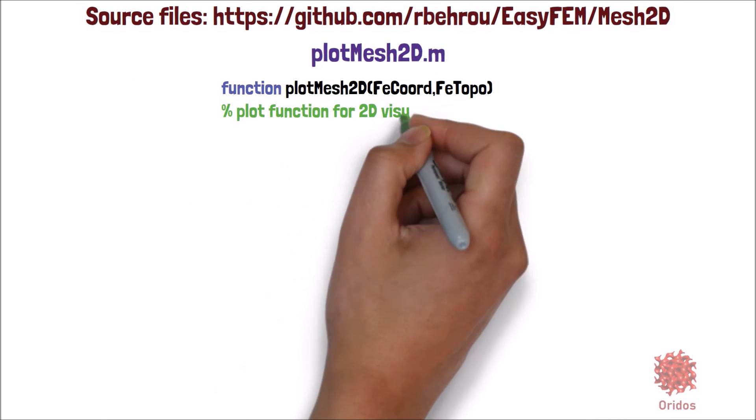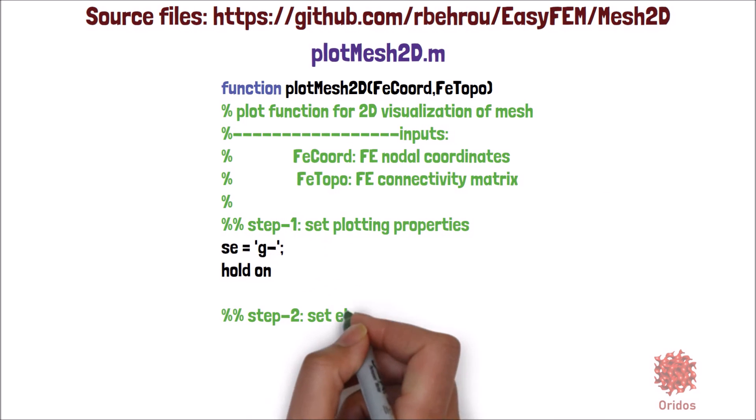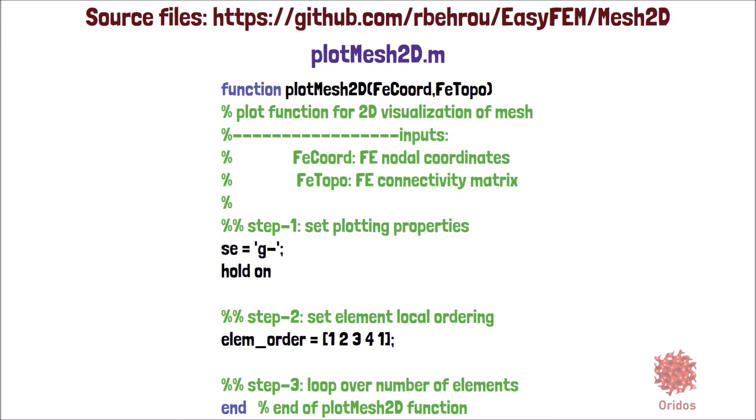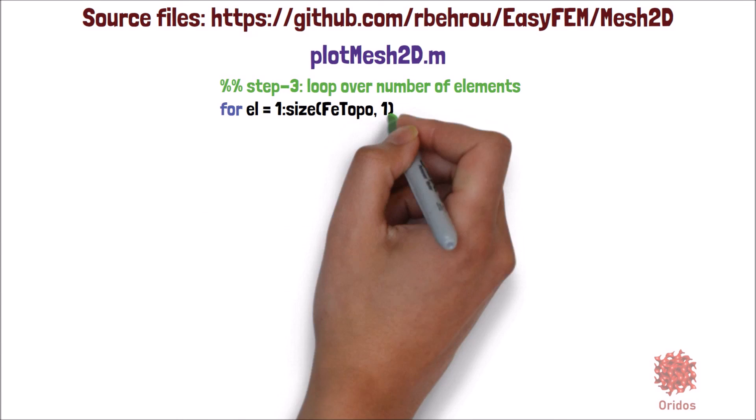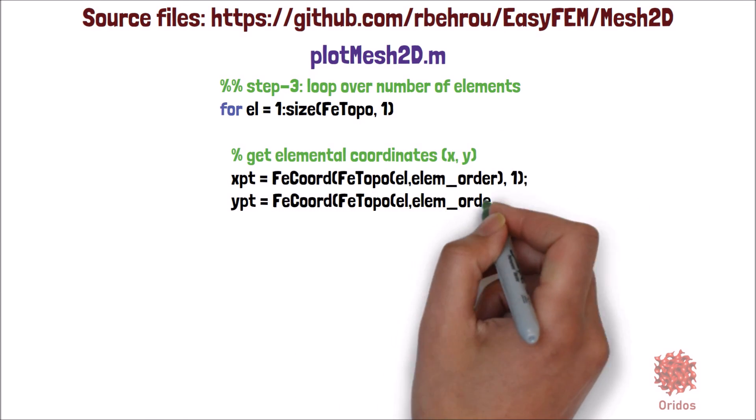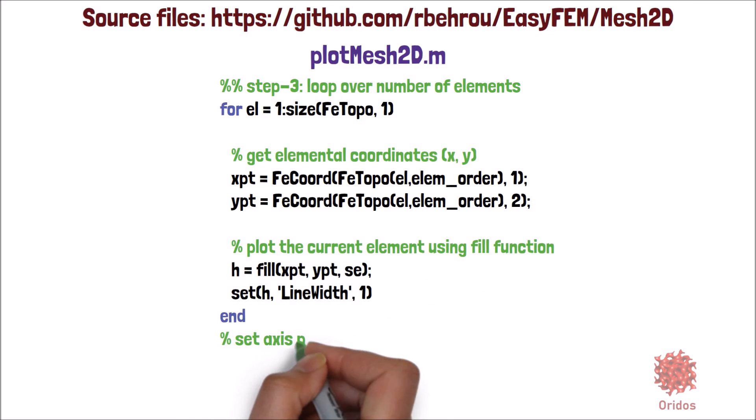For the PlotMesh2d function, we will initialize the plot properties and set up the local ordering pattern, the counterclockwise pattern we discussed. And finally, make a loop over the number of elements to extract the nodal coordinates for each element, based on the given local nodal pattern, and use the MATLAB fill function to plot the mesh for the current element.